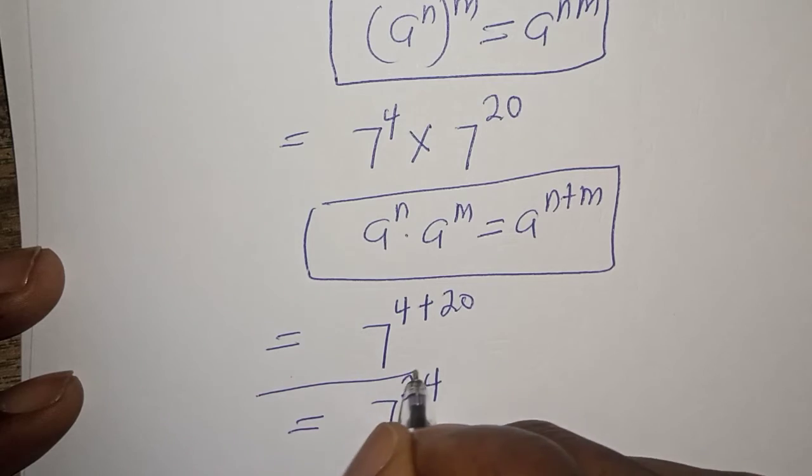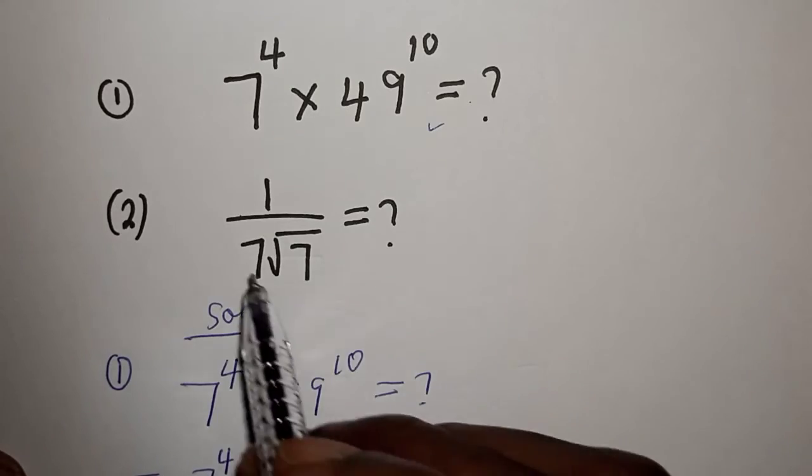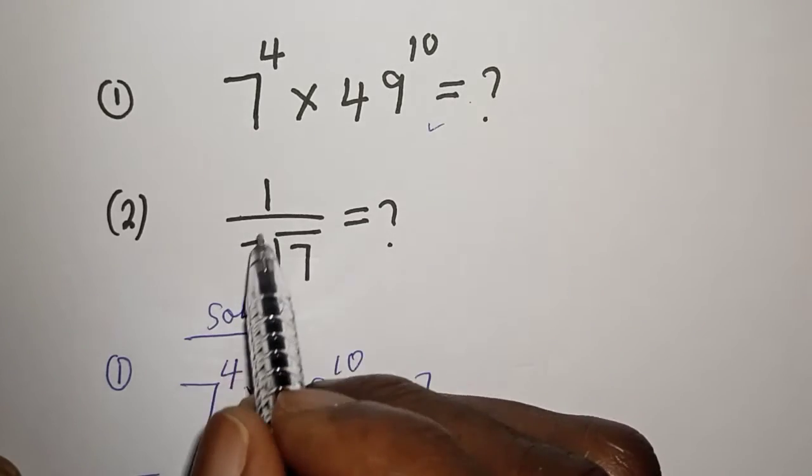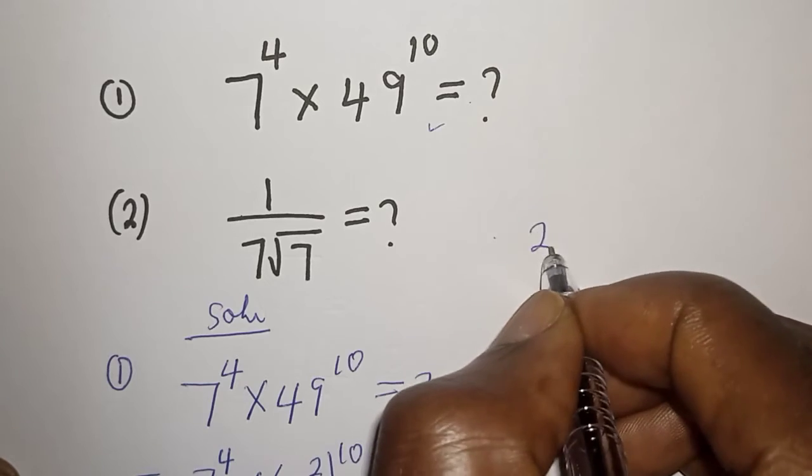And this is the final answer. Now let's consider the second one. The second one is 1 over 7 root of 7.